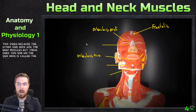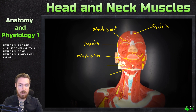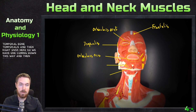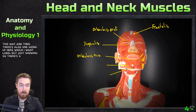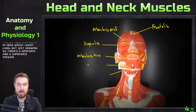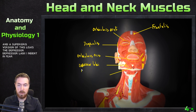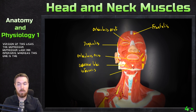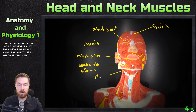This one on the side here is called the temporalis — a large muscle covering your temporal bone. So there's a depressor labii inferioris coming down this way, and there's also a depressor labii superioris going up. And then right here we have the mentalis, which is the mental region of the front of your chin.